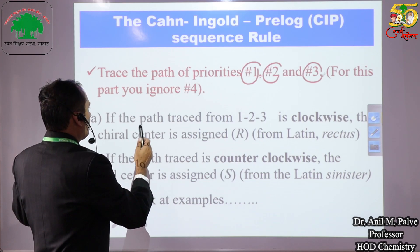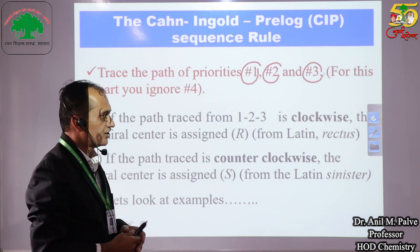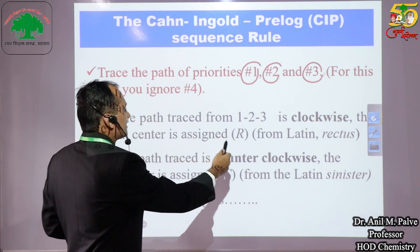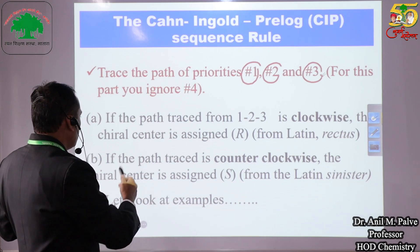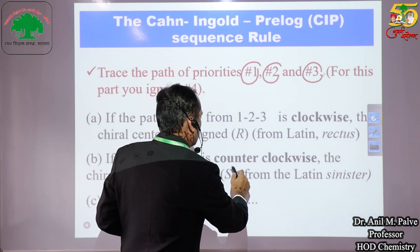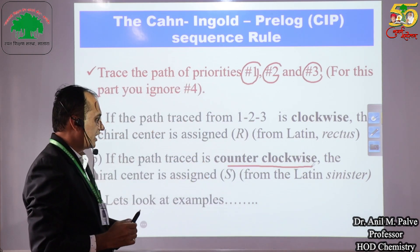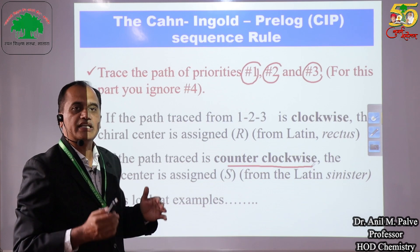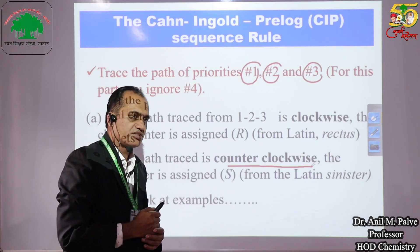If the path traced from 1, 2, 3 is in a clockwise direction, then the chiral center is assigned as R configuration. And if the path traced is counterclockwise, then the chiral center is assigned as S configuration, from the Latin word sinister.